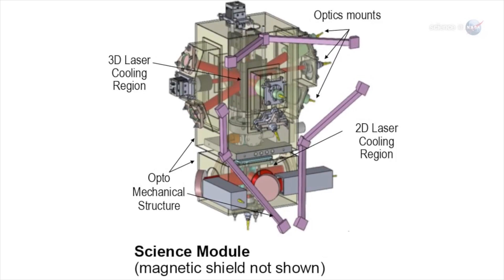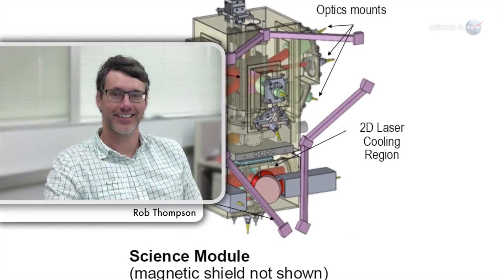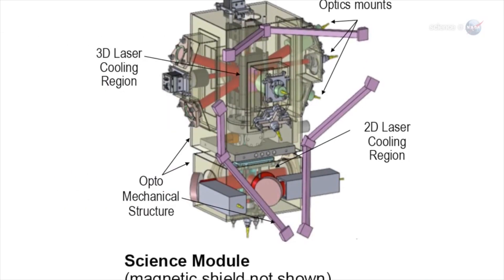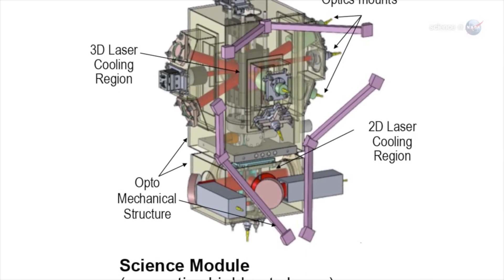We're going to study matter at temperatures far below anything found naturally, says Rob Thompson of NASA's Jet Propulsion Laboratory. He's the project scientist for NASA's Cold Atom Lab, an atomic refrigerator slated for launch to the space station in 2016.